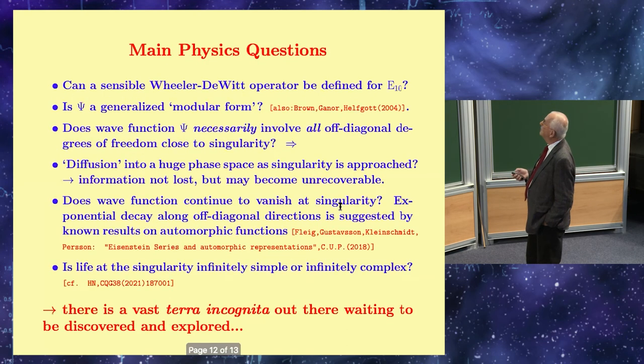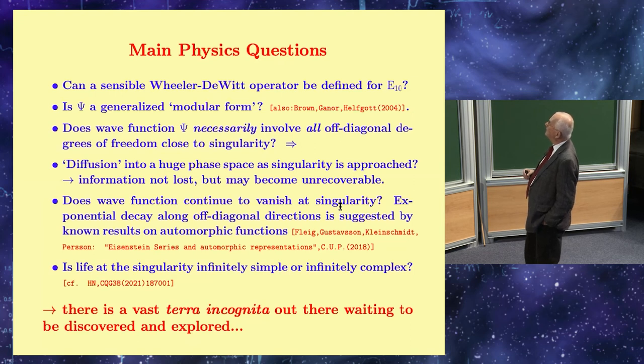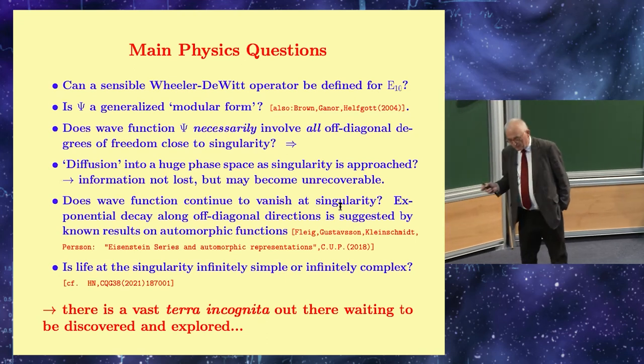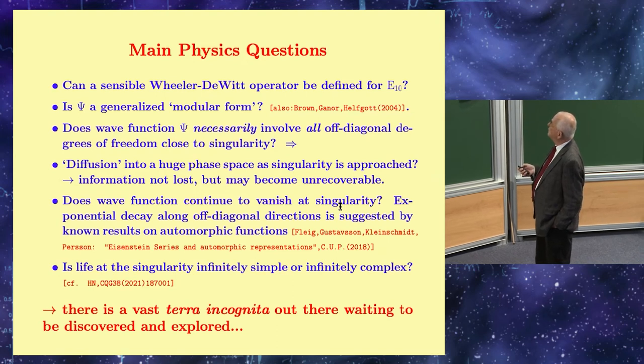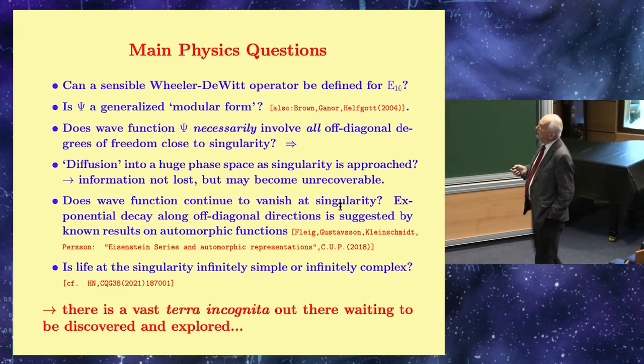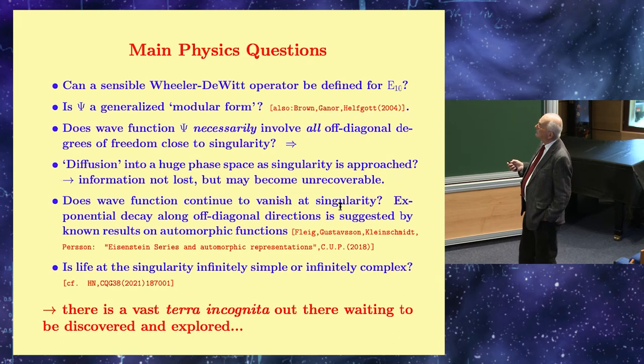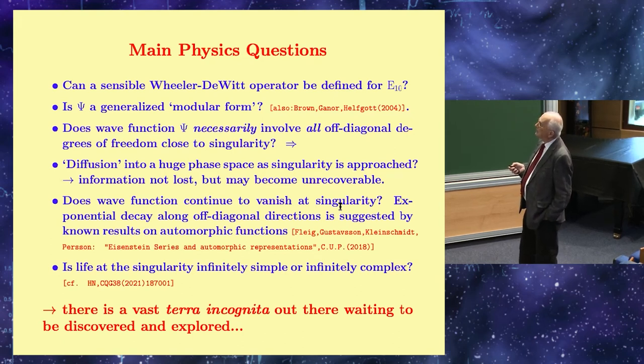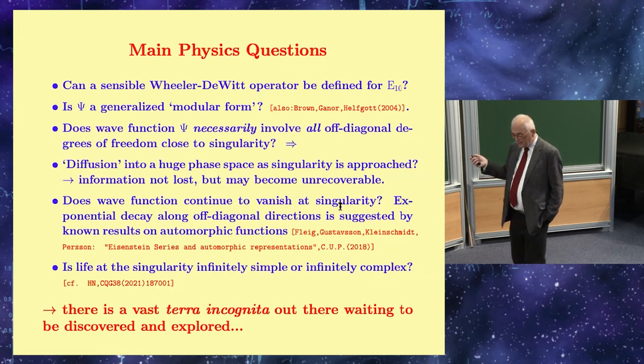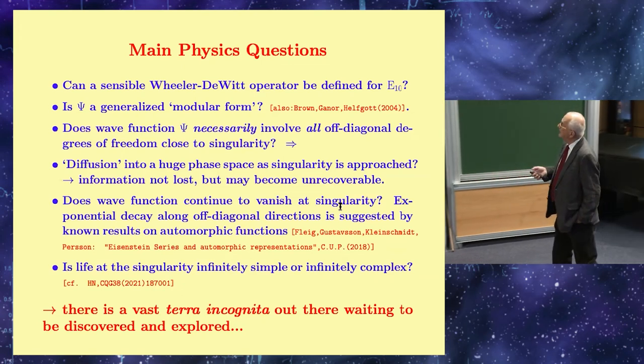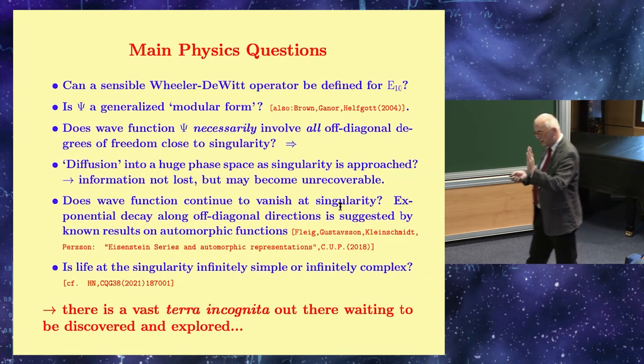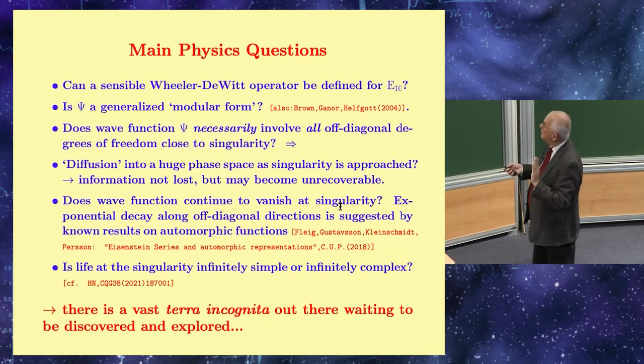If this is true, then something like what I showed on the previous transparency might still be true at the end of the day, but in a way that at the moment I have no idea how it could possibly work. So let me conclude. There are now many open questions. First of all there's the mathematics, which as Igor said is deepest mathematics. But there's also physics questions: can a sensible Wheeler-DeWitt operator be defined for E10? Is psi then a kind of generalized modular form vastly hugely generalized with respect to something like E10 over the integers?